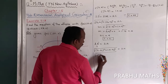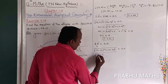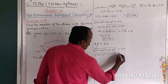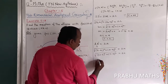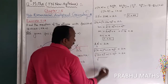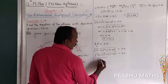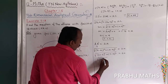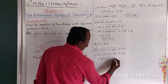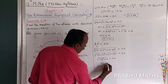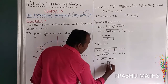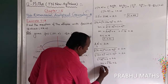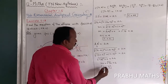So √[6² + 0] = 2a, which gives √36 = 6 = 2a, therefore a = 3.